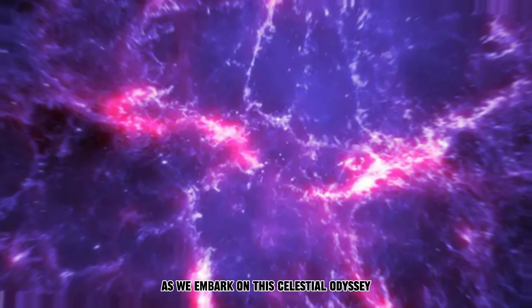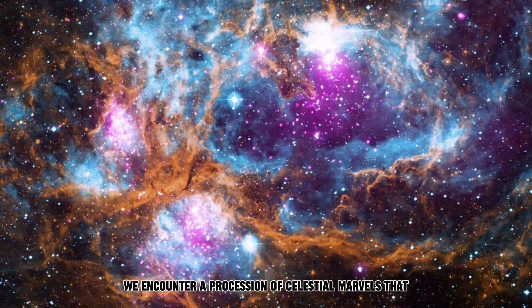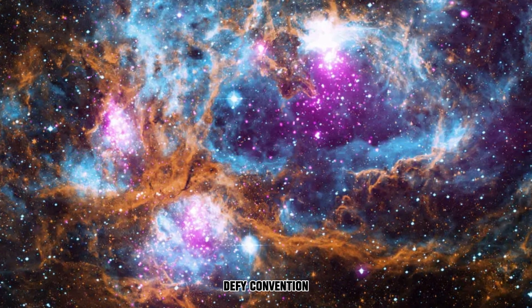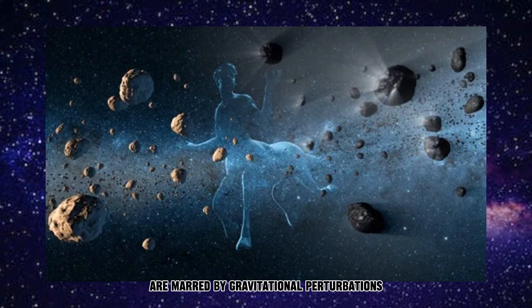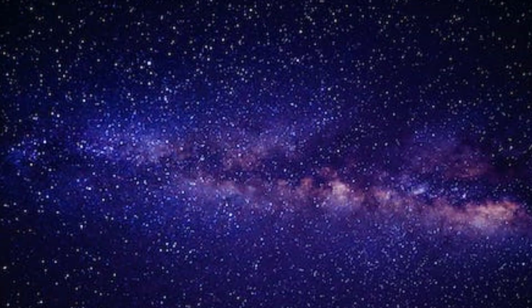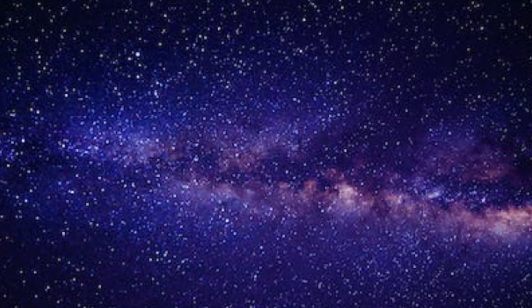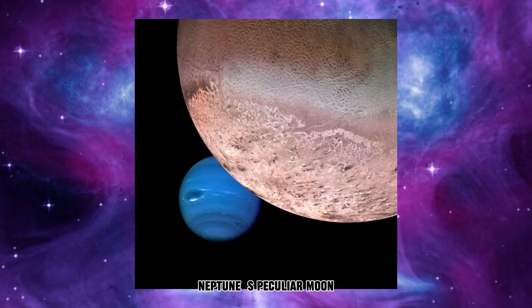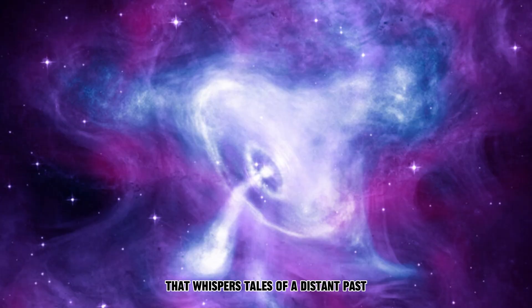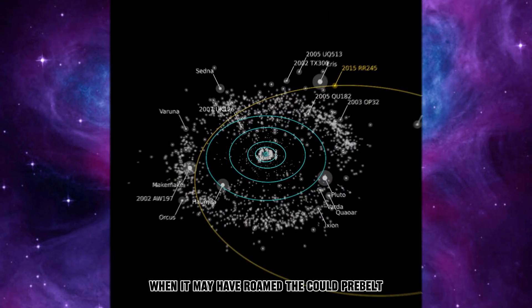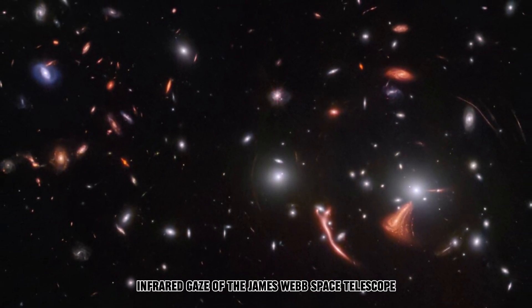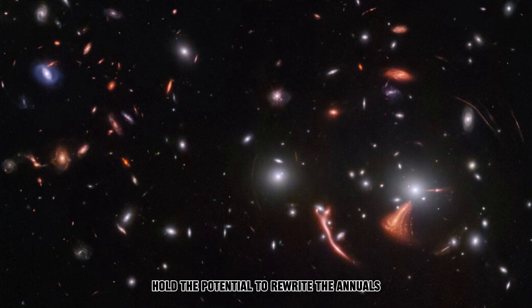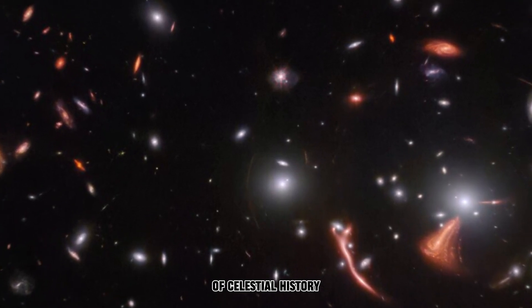As we embark on this celestial odyssey, we encounter a procession of celestial marvels that defy convention. The centaurs, animated objects whose orbits are marred by gravitational perturbations, captivate our attention. We find Triton, Neptune's peculiar moon that whispers tales of a distant past when it may have roamed the Kuiper Belt. These revelations, unveiled through the sensitive infrared gaze of the James Webb Space Telescope, hold the potential to rewrite the annals of celestial history.